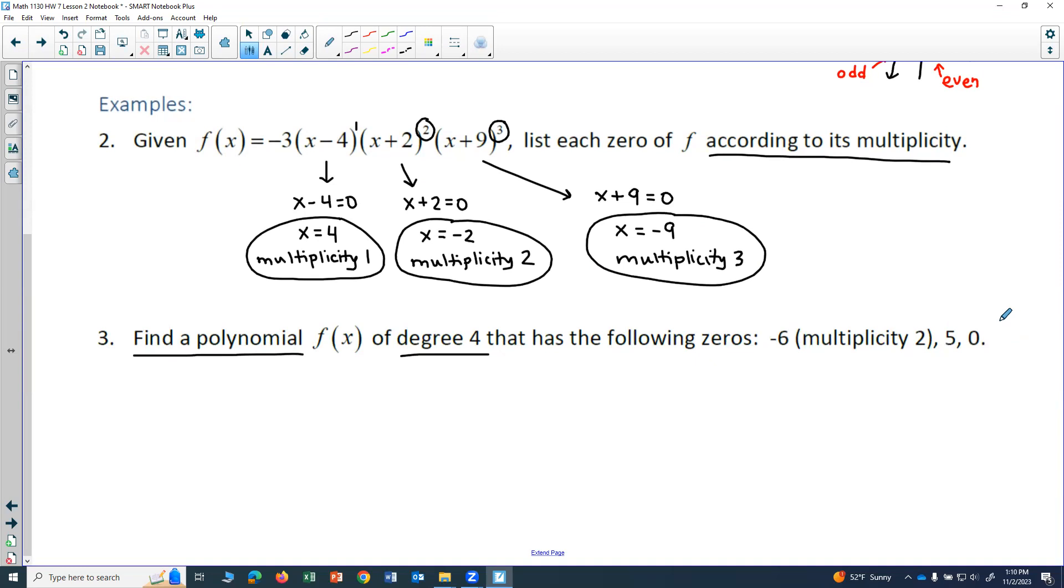So basically, what we know is we know that our zeros are going to be x equals negative 6, x equals 5, and x equals 0. Now, remember, these are the zeros of that polynomial.